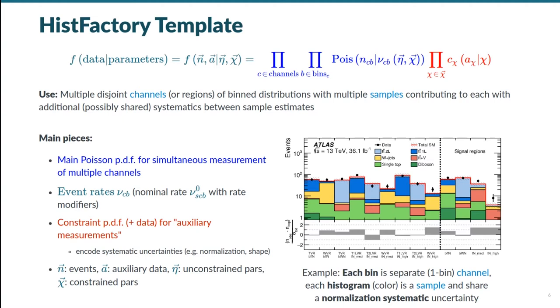In the plot below, we see that each bin is a different analysis region, a different channel. Here, there's just one bin in each channel, but that's just this particular example. There are analyses in which channels contain many bins. So following that, a sample corresponds to a particular physics process that could result in producing particles that would get selected for a particular channel.